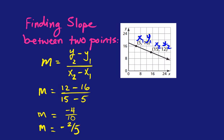Another way — some people prefer this with a graph — is rise over run. Start at the point to the left, count down and then count over. Going from y=16 to y=12 is 4 units down, so that's negative 4. From x=5 to x=15 is 10 units to the right. Rise over run gives negative 4 over 10, which reduces to negative 2/5 — the same answer either way.